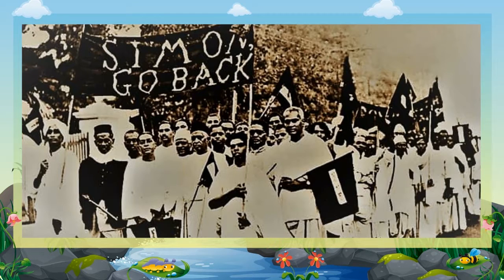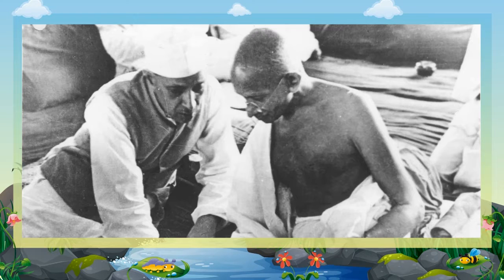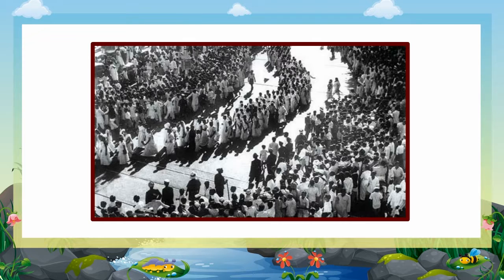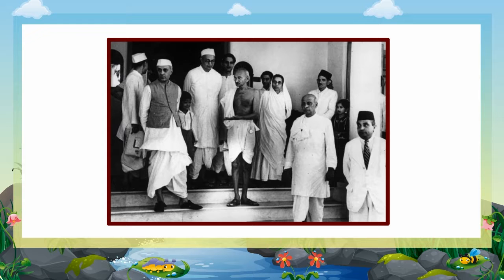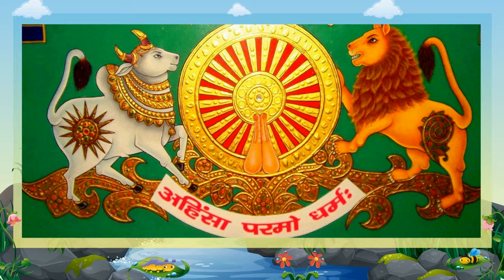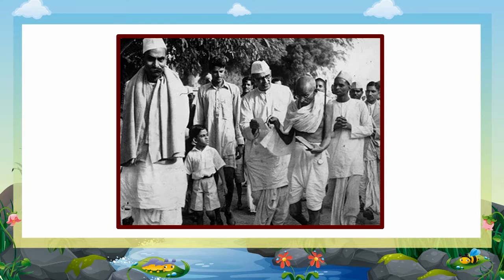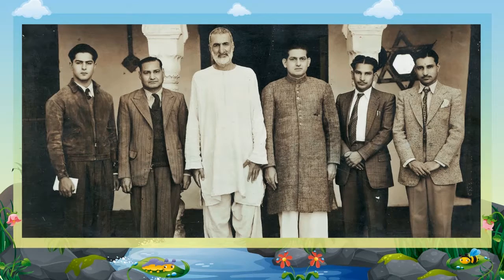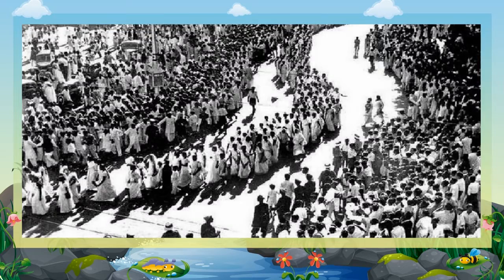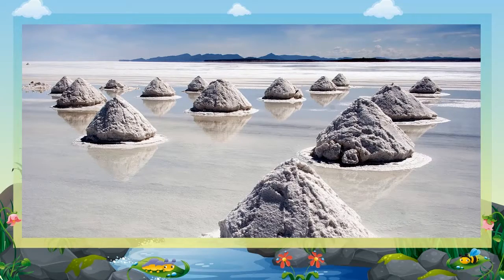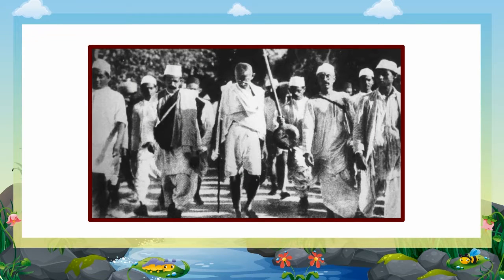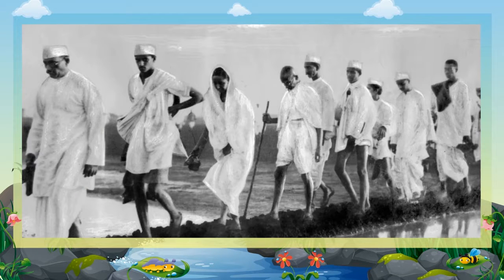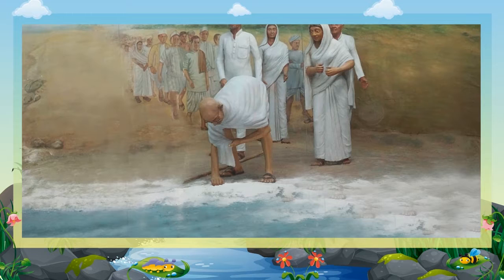Civil Disobedience Movement: Civil disobedience means active refusal to obey certain laws, demands, and commands of a government or occupying power. In its most non-violent form, known in India as ahimsa, it could be said to be compassion in the form of respectful disagreement. People joined the Civil Disobedience Movement all over India. On the northeast frontier, 13-year-old Rani Gaidinliu led the movement. In the Northwest Frontier Province, Khan Abdul Ghaffar Khan, also known as the Frontier Gandhi, led the movement. The Salt Satyagraha was a campaign of non-violent protest against the British salt tax in colonial India. Mahatma Gandhi led the Dandi March from Sabarmati Ashram near Ahmedabad to the sea coast near the village of Dandi on March 12, 1930.